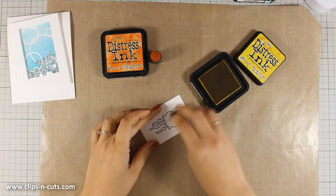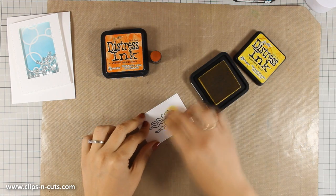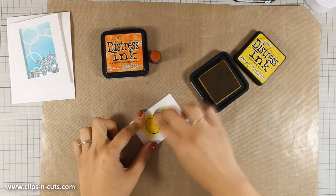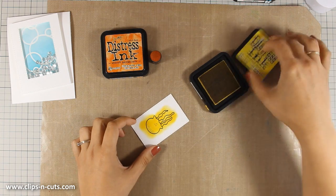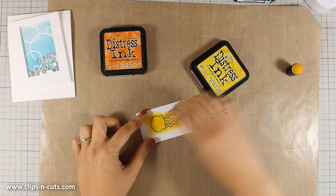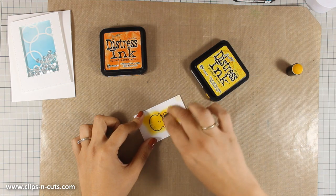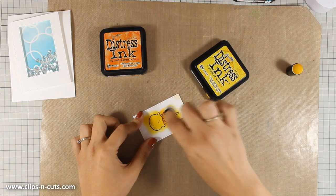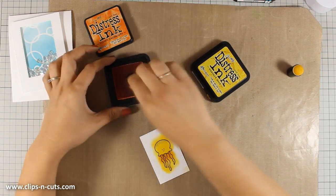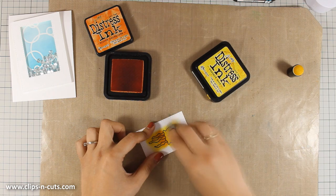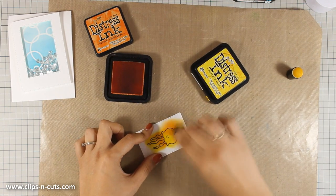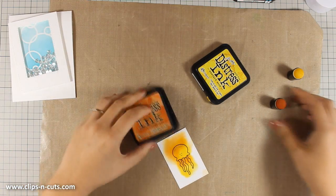At this stage you can use any coloring method that you love like Copic markers or watercoloring, but I just think that using my finger dabbers with distress ink is such a quick method. I have firstly applied some mustard seed all over the jellyfish and now with some spiced marmalade I am adding some shading. Once I am happy with the coloring I am going to use my scissors and cut out the image.